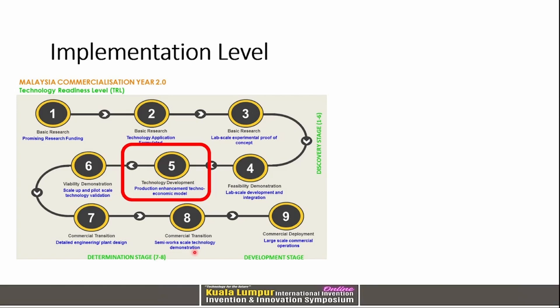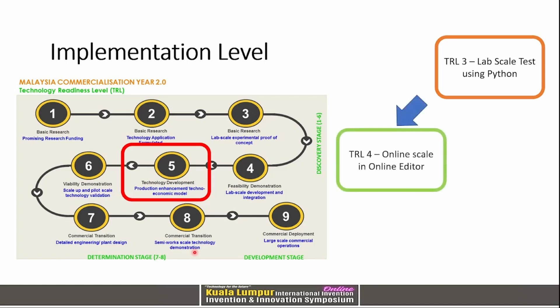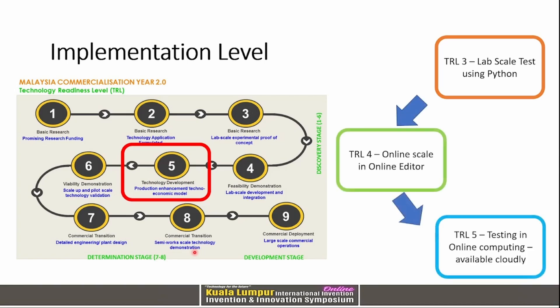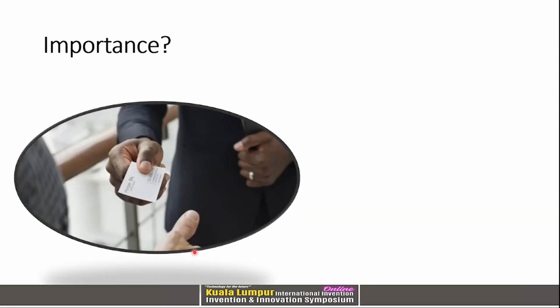In terms of implementation level, we are currently at TRL Level 5. We started at TRL Level 3 with a lab skill test using Python, then progressed to TRL Level 4 with an online skill test in an online editor. Currently we are testing in online cloud computing, and we have successfully produced our e-business card in PDF and JPEG formats.